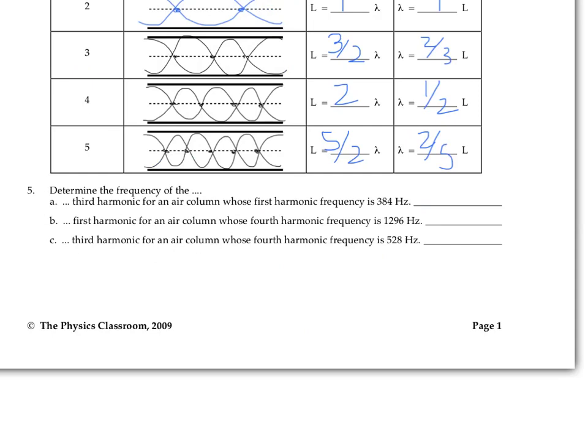For example, in this problem here, we're told that the first harmonic frequency is 384 hertz, and we're looking to figure out what the third harmonic frequency is. Because going from first to third cuts the wavelength by a factor of three, when we go up to the third harmonic, we're going to have three times the frequency. So we just multiply 384 times three, and we get a third harmonic of 1152 hertz.